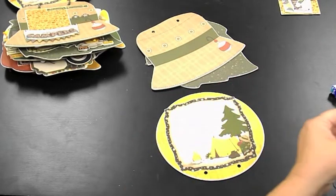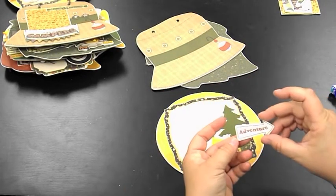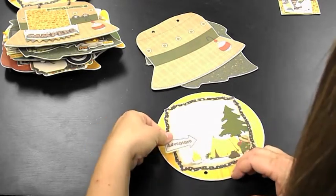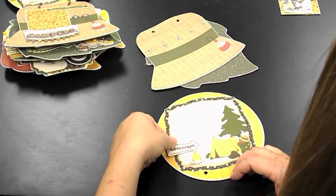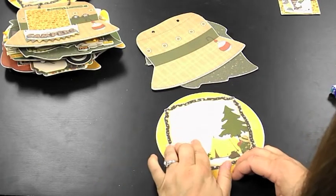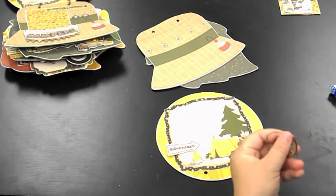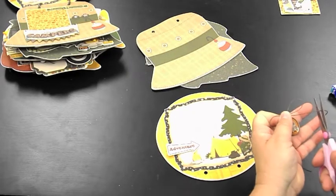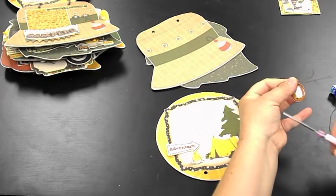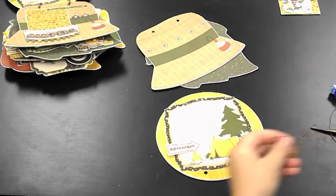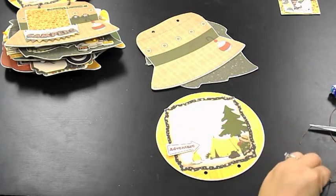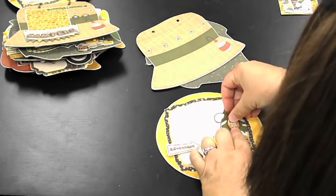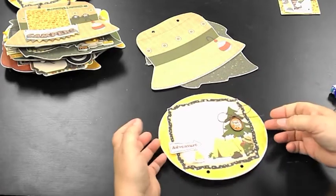And then we've got the cardstock sticker, the adventure arrow, with some pop dots on the back to add dimension. Just layer it there. And the cute little trinket from the Camp Lot trinket set. I've tied some dark brown hemp in there. And this guy I'll add it using a glue dot and there you are.